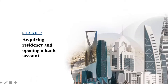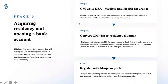Phase two takes approximately another three to four weeks. The Ministry of Labor registration alone can take up to 25 days. Phase three involves the GM visiting Saudi Arabia, opening the bank account, and registering with all relevant portals.